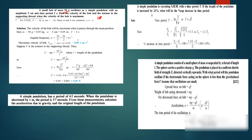For the first part, the maximum velocity in simple harmonic motion is angular velocity times the amplitude. Angular velocity is given by 2π over the time period, which is 2π over 2 seconds, giving us π radians per second. Multiplying by the amplitude of 5 cm, which is 0.05 meters, gives the maximum velocity.